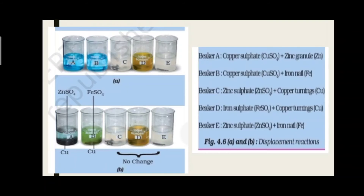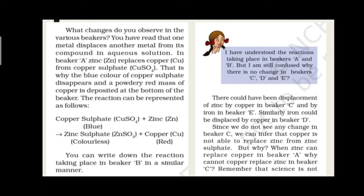यहाँ पर color change आप Beaker A और Beaker B में देख सकते हो। Beaker A के अंदर Zinc, Copper को replace करता है - displacement हुआ। Copper Sulfate (CuSO4) का blue solution Zinc के साथ react करता है तो Zinc Sulfate (ZnSO4) मिलता है जो colorless होता है और Copper red color में separate मिलता है।